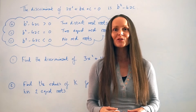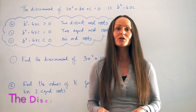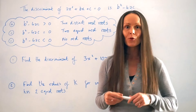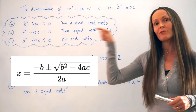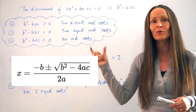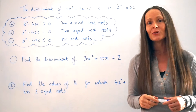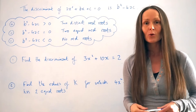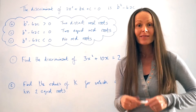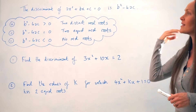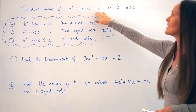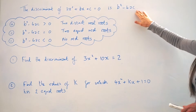In this lesson I'm going to show you how to find and use the discriminant of a quadratic equation. If you think back to the quadratic formula and look at the square root symbol, inside it is written b squared minus 4ac. That value is called the discriminant of a quadratic equation and it tells us about the roots, i.e. the solutions, of that quadratic. The discriminant of ax squared plus bx plus c equals zero is b squared minus 4ac.